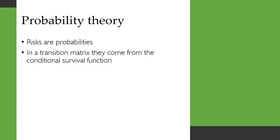We're going to look at some probability theory now. Risks are probabilities. In a transition matrix, they come from the conditional survival function.